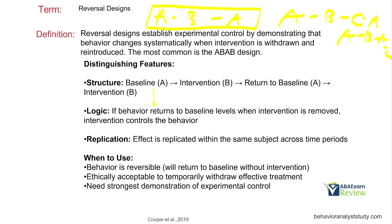Remember your baseline logic: prediction, replication, and verification. If behavior returns to baseline levels when intervention is removed, the intervention controls the behavior. The more we do the reversal, the stronger the case. If we're seeing a distinct change from baseline to intervention and back, there's a good chance experimental control exists. Replication — the effect is replicated within the same subject across time periods. We are replicating the treatment effect with the same subject at different points in time.